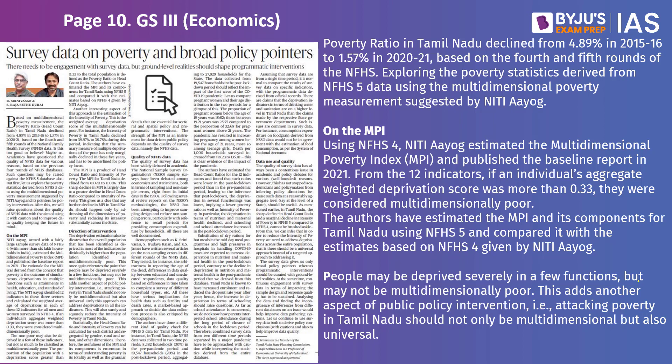This article says that the poverty ratio in Tamil Nadu, as per the recent government numbers, has declined considerably from 4.89% to 1.57%. This is data with respect to the Multi-Dimensional Poverty Index, called the MPI. Many people have questioned how there can be such a huge drop, because such a drop is not really possible for most big states, and Tamil Nadu is a big state.